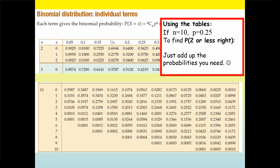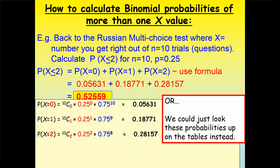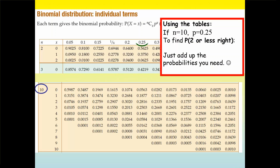We go to our formula sheet and look up the binomial distribution table. On the left we see n, the number of trials — we did 10 questions so we go to n=10. Then we look at the probability of success, 0.25, and we're interested in x being 0, 1, or 2. We find those values and add the numbers together. Notice those numbers are the same as our formula calculation, except they're rounded, giving a similar answer.